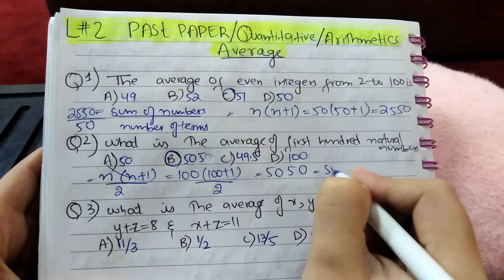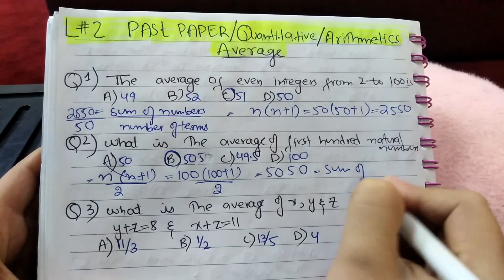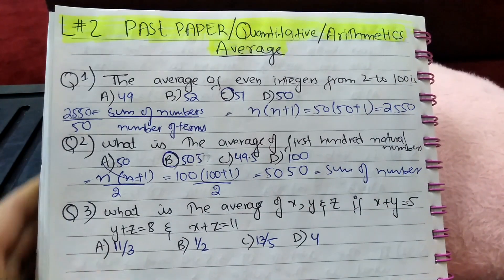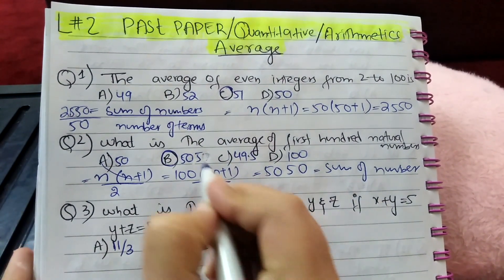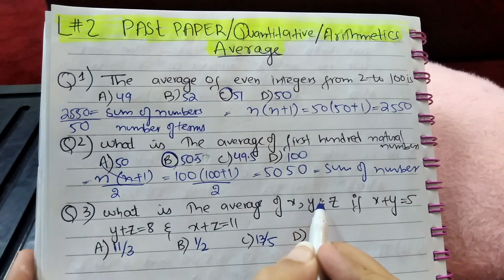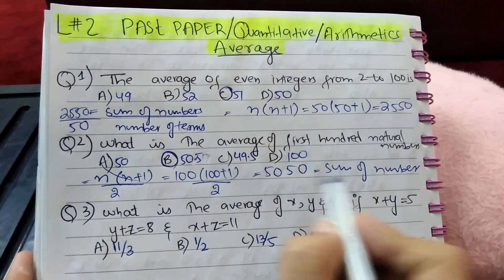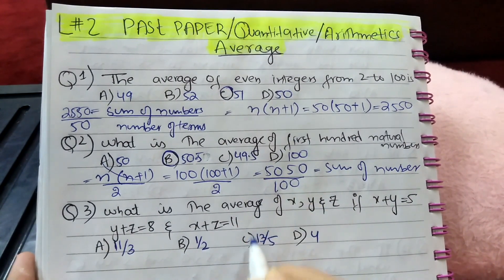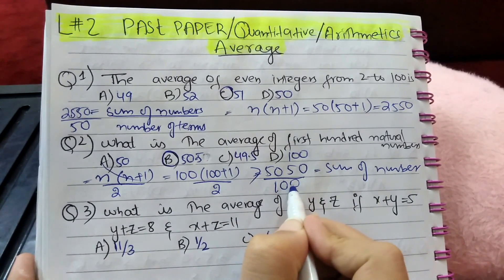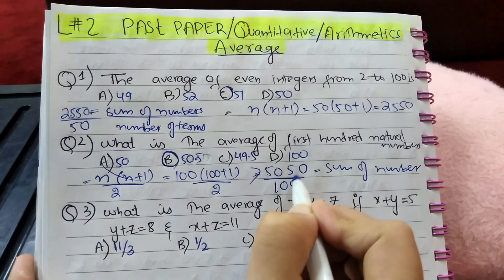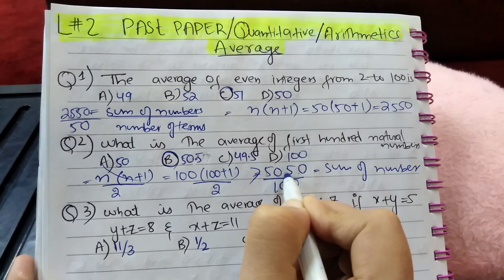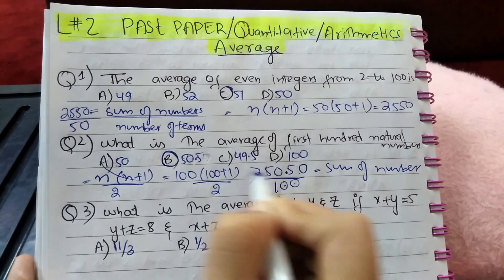Sorry, that 5050 is the sum of numbers. The average is calculated by sum of numbers divided by number of terms, and there are 100 terms. So when 5050 is divided by 100, place the decimal point two digits from the right, giving 50.5.